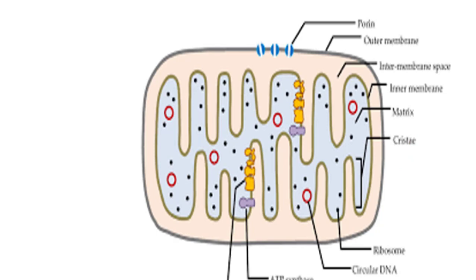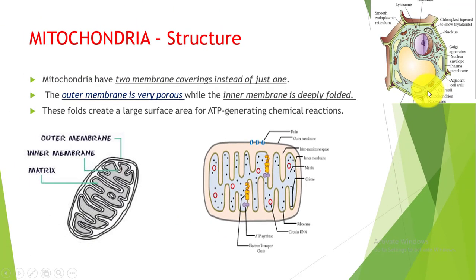Mitochondria is an oval cell organelle with a double membrane. It is present in eukaryotic cells but not in prokaryotic cells. As we saw the difference between eukaryotic and prokaryotic cells, prokaryotic cells do not have membrane-bounded structures or cell organelles. Their genetic material floats freely in the cytoplasm, so mitochondria is also not present in a prokaryotic cell.